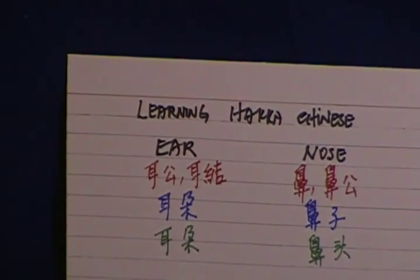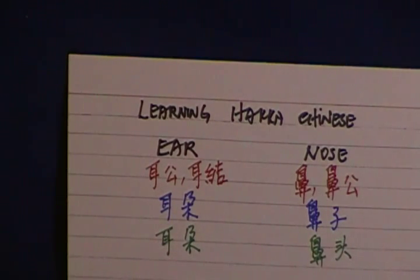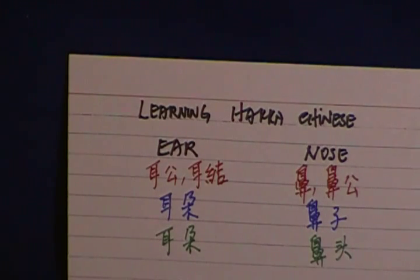Ear. Ear in Hakka Chinese is ni kong or ni ket. Ni kong or ni ket. And in Mandarin is er duo. In Shanghai dialect is ni ket.